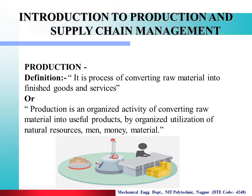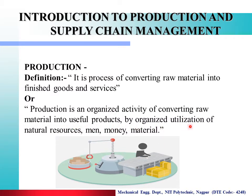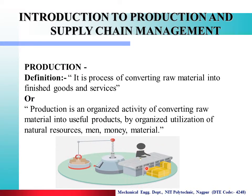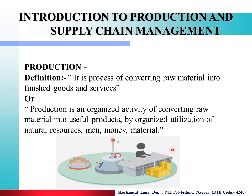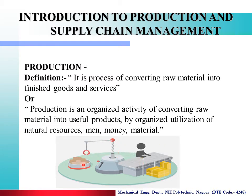Now we see what is meant by production. Production kia hata hai? It is the process of converting raw material into finished goods and services. Production is an organized activity of converting raw material into useful product by organized utilization of natural sources, man, money and materials. In simple words, raw material converted into finished goods — that process is called production.